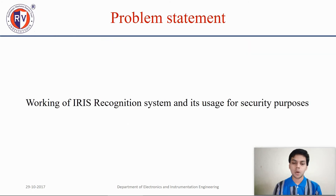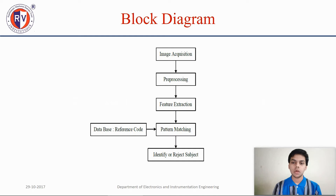Problem statement: working of the iris recognition system and its usage for security purposes. This is the block diagram. It has image acquisition, preprocessing, feature extraction, and pattern matching, in which it checks the given image of the iris against the database and identifies or rejects the subject.